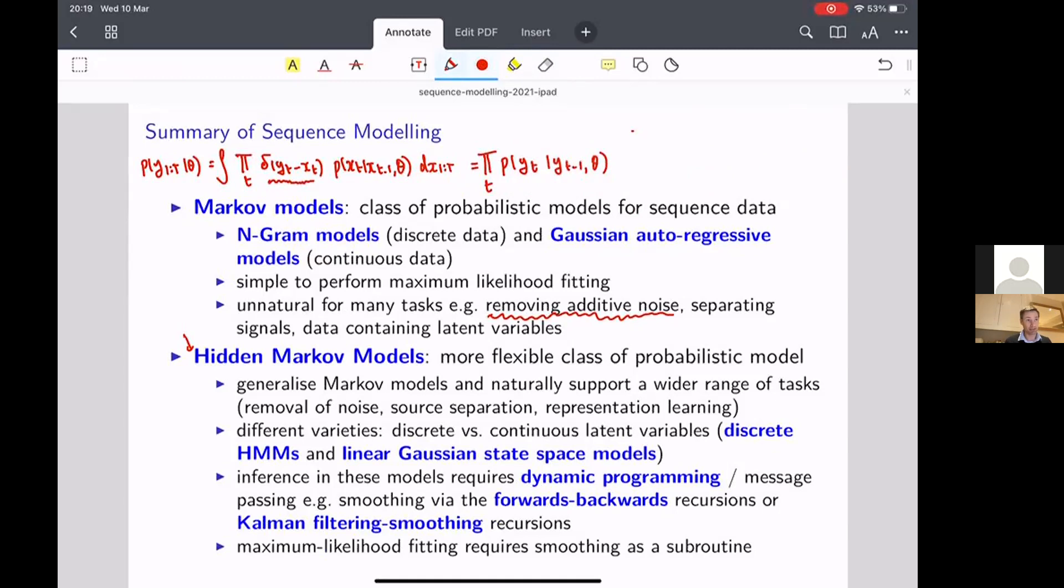The X's will just take the value of Y. And so what we get back here is the Markov model. It's a Gaussian autoregressive model of order one.